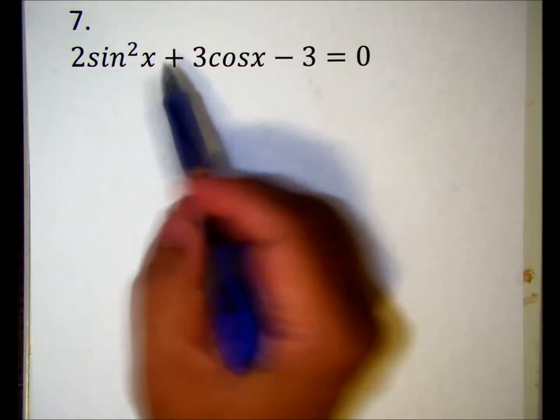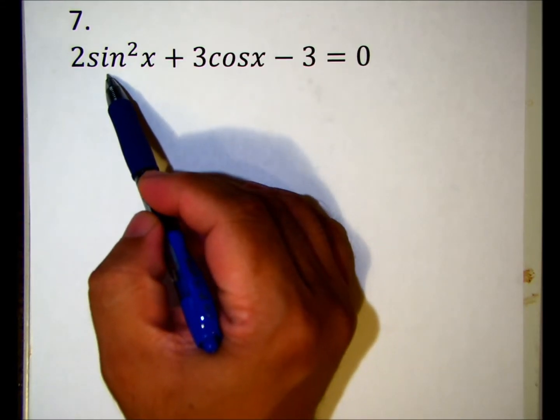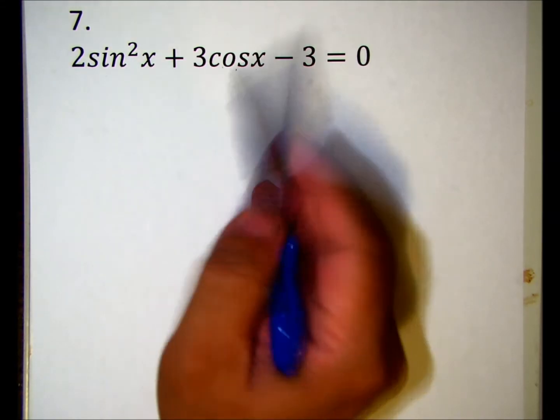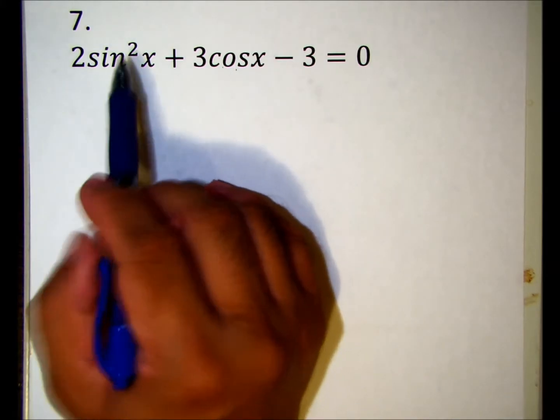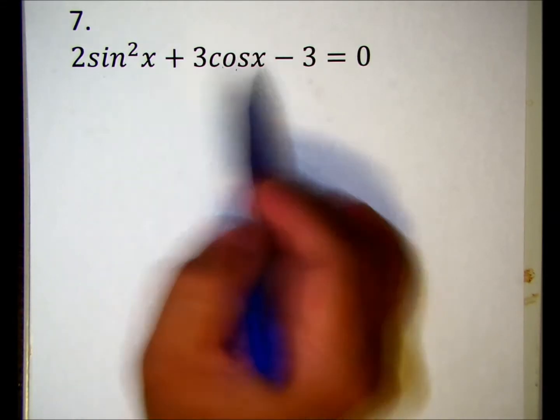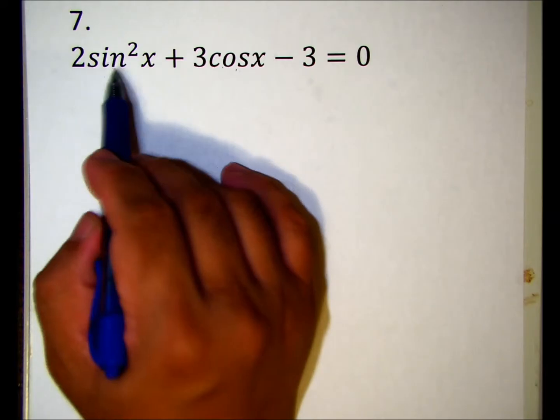This is number seven. This time we have a quadratic but it's in two different trig functions, so you want them to be in the same trig function. Otherwise you can't factor this, so we're going to change sine squared x.